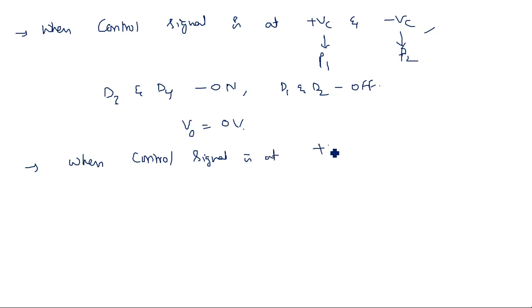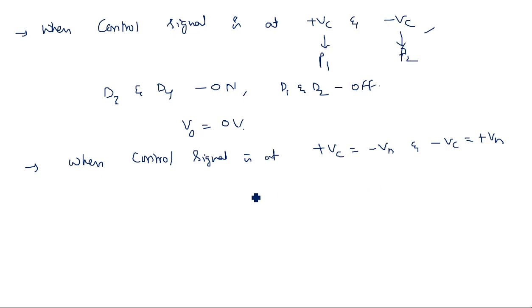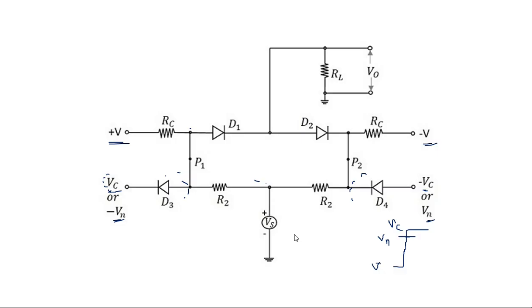In the second case, when control signal E is such that plus Vc equals plus Vn and minus Vc equals plus Vn, diodes D1 and D2 are in the ON state because they have sufficient voltage, and D3 and D4 are in the OFF state. Therefore V0 is equal to the input voltage Vs. This is how the input signal is transmitted to the output using the four diode sampling gate.